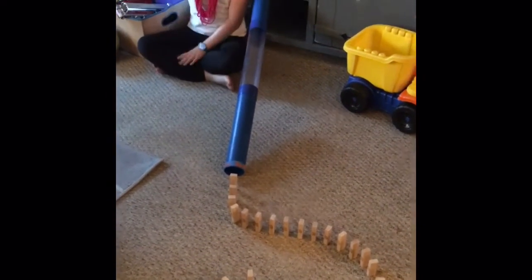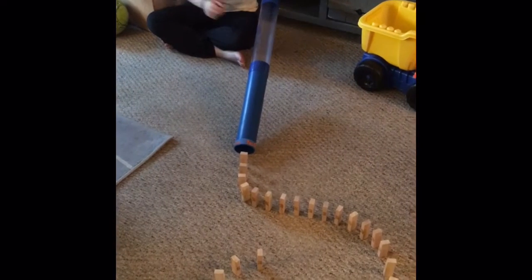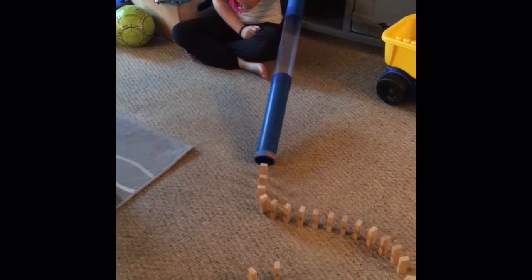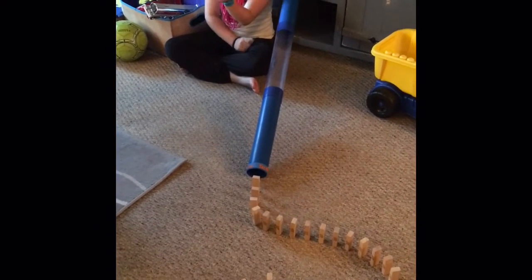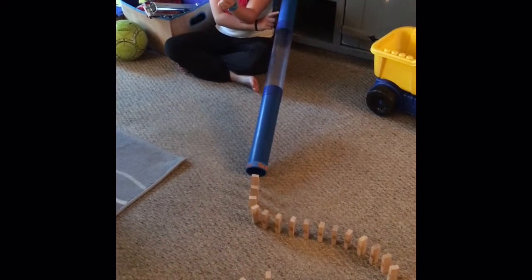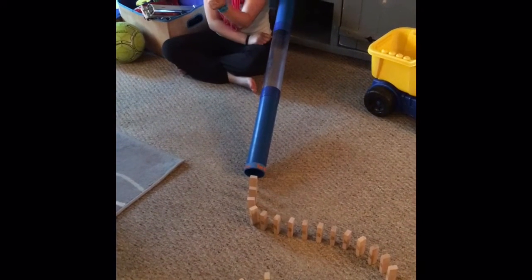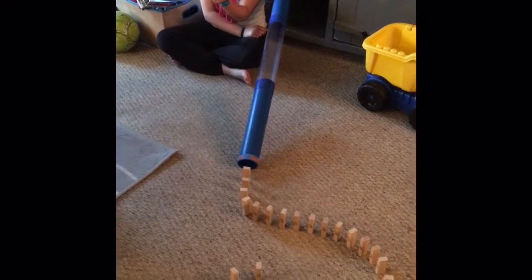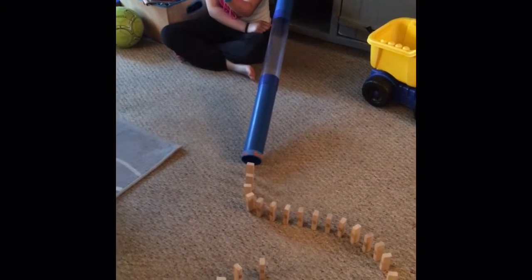All right, so the car represents the nerve signal coming from the brain and spinal cord. The tube represents the motor neuron, the end of the tube represents the neuromuscular junction, and those Jenga pieces represent the acetylcholine coming across the synaptic cleft.